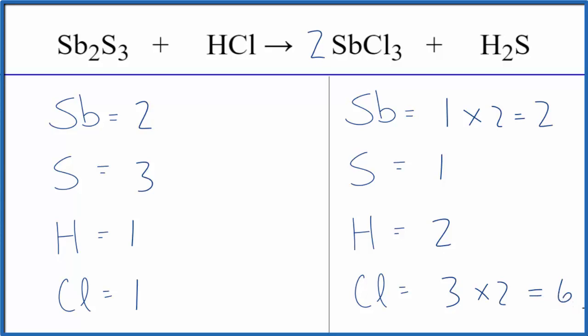Why don't we go and balance the chlorines next? We could put a 6 in front of the HCl, so we'd have 1 times 6 for the hydrogen. That gives us 6 hydrogens, and 1 times 6 for the chlorines. So now the chlorines are balanced.